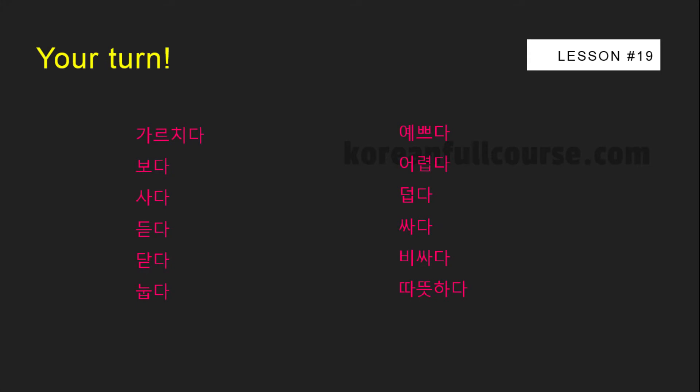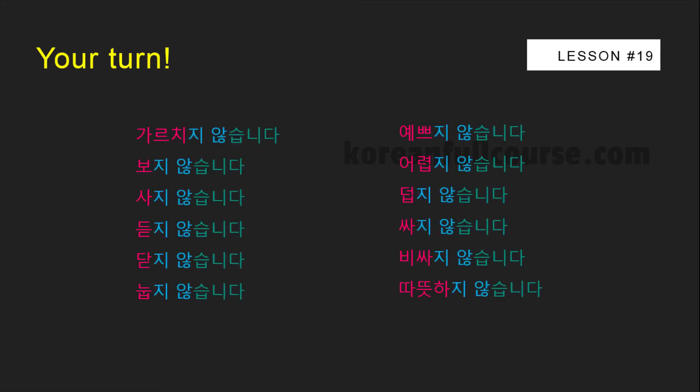Here is a list of verbs and adjectives. Get a pencil and paper and make negative sentences using these words. Once you're done, play the video again to see my solution. I simply attached 지 않습니다 to the verb and adjective stems.